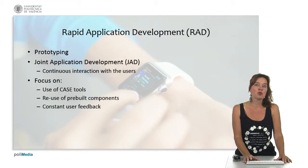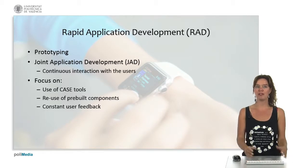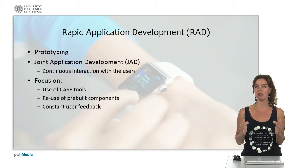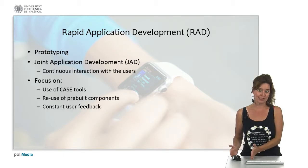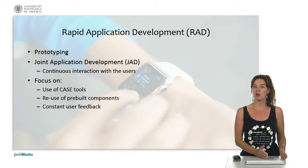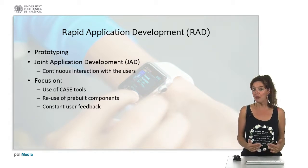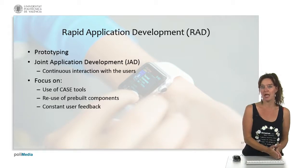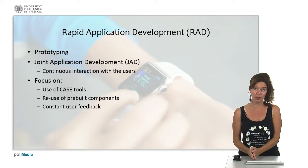Another model for prototyping is called rapid application development. Rapid application development goes together with the joint application development where we have continuous interaction with the users because that's important. It's the users that decide whether the system you give them is what they need or not. So rapid application development or RAD is also prototyping, but it focuses on constant user feedback, reuse of pre-built components. So if it already exists, don't do it again. Just reuse it and use CASE tools, these computer-aided software engineering tools that we've seen in the previous video.